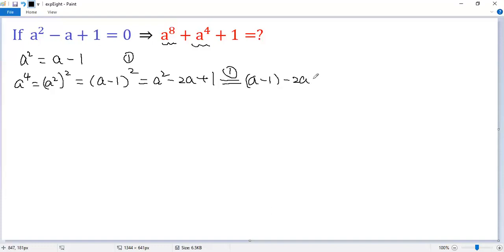And then minus 2A plus 1. So you see A minus 2A is negative A and negative 1 plus 1 is 0. So we denote this as equation 2.